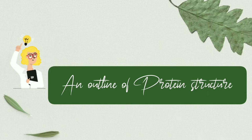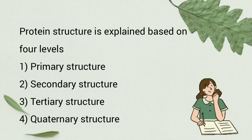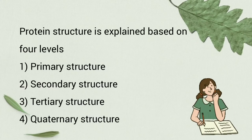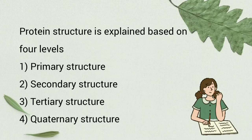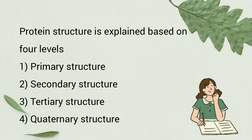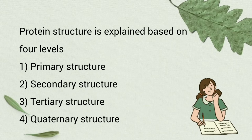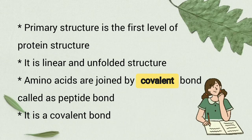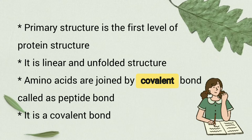So let us go to the video. The structure of protein is explained based on four levels: primary structure, secondary structure, tertiary structure, and quaternary structure. In primary structure, amino acids are joined together by peptide bond.